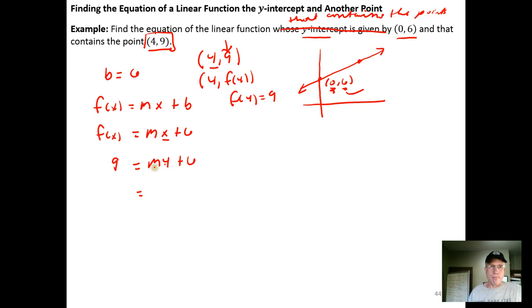And now I just solve for m. So subtract the 6 from both sides to get 3. 3 equals m times 4. And then divide both sides by 4 to isolate the m. So we get 3 quarters is equal to 4 divided by 4 is 1, and 1 times m is just m. And so now I know the slope of the line.